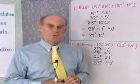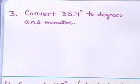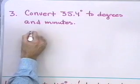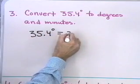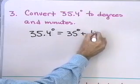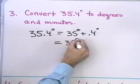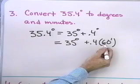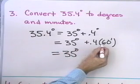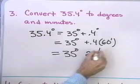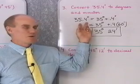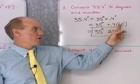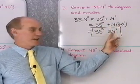Next, I want to convert a number written in decimal degrees to degrees and minutes. Let's convert 35.4 degrees. So 35.4 degrees equals 35 degrees plus 0.4 degrees. I take the decimal part — 0.4 degrees — and multiply by 60 minutes: 0.4 times 60 is 24. So 35 degrees 24 minutes is the same as 35.4 degrees. Simply take the decimal part and multiply by 60.